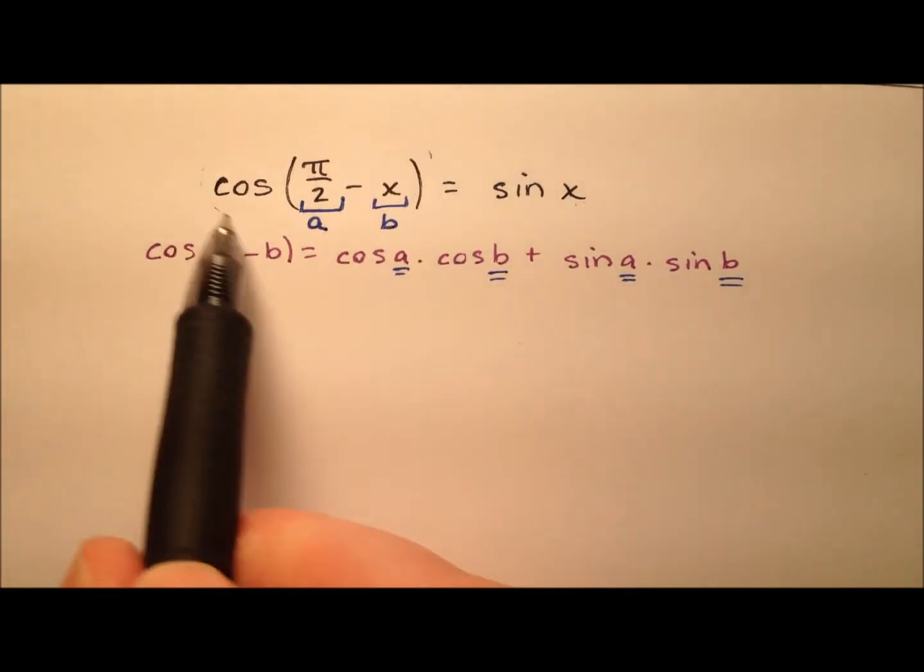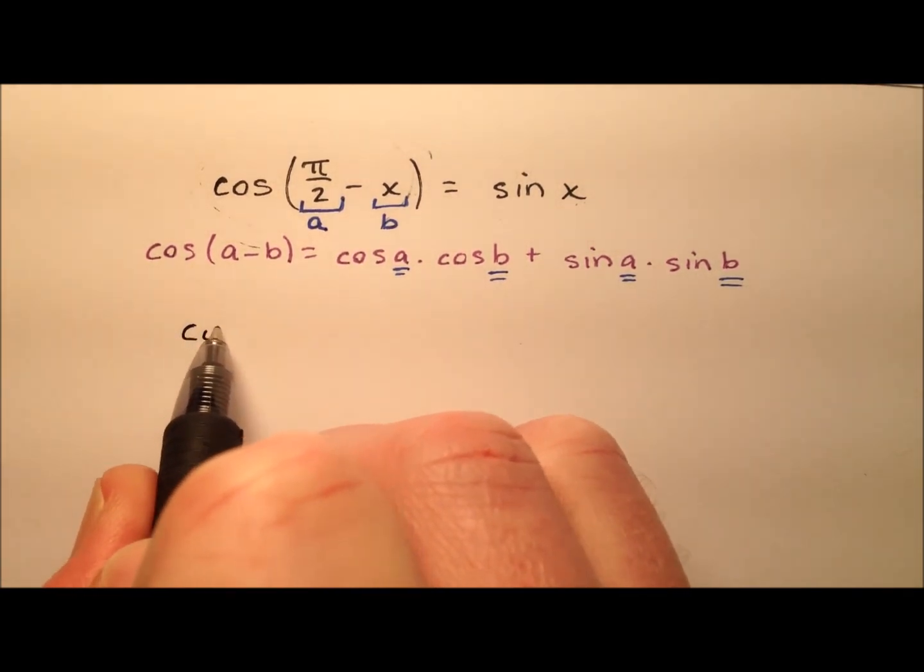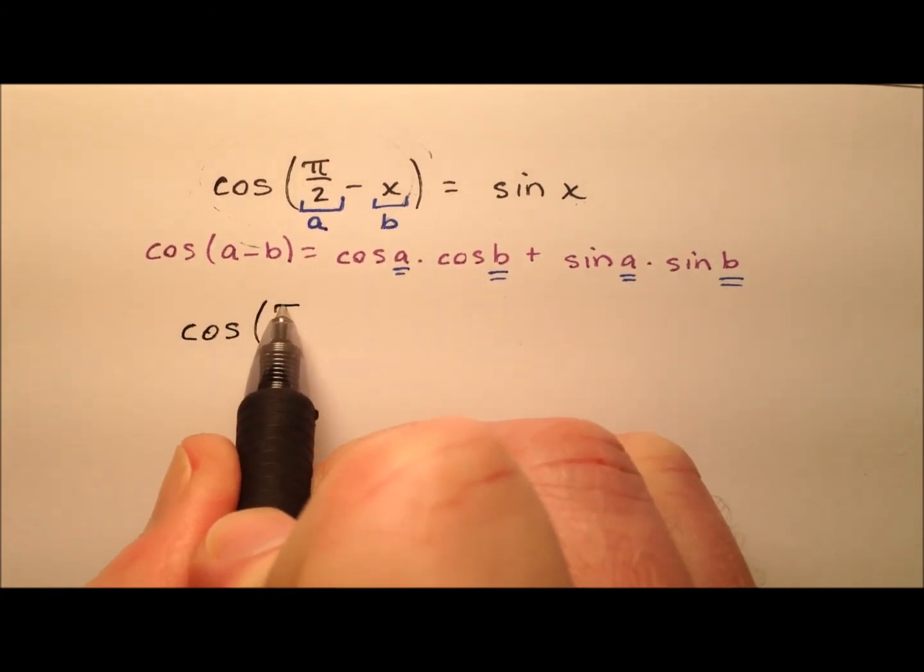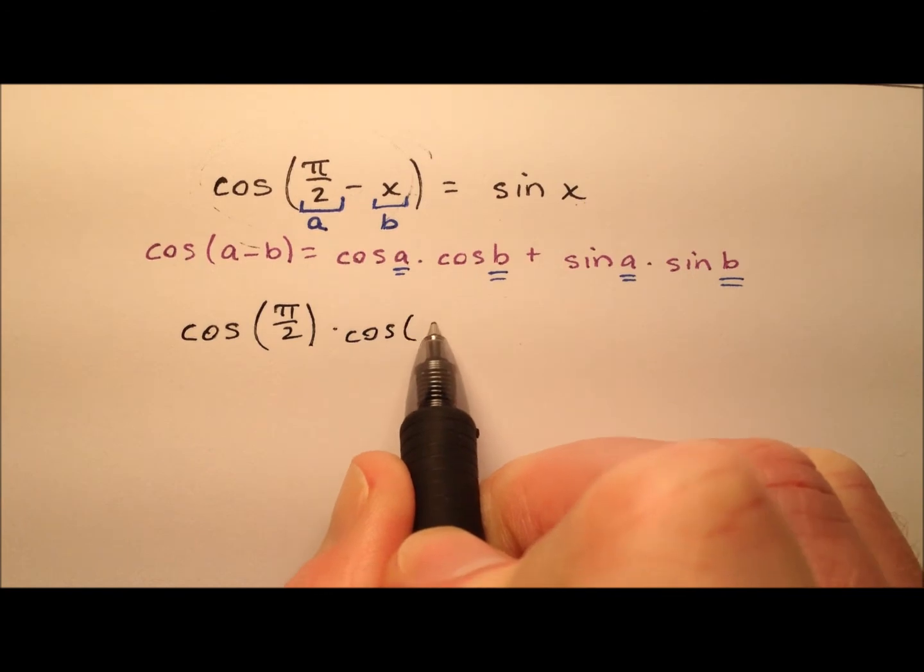Let's go ahead and use the left side and apply this identity and see what we get. So it's going to be the cosine of a, which is the cosine of pi over 2, times the cosine of b, which is the cosine of x,